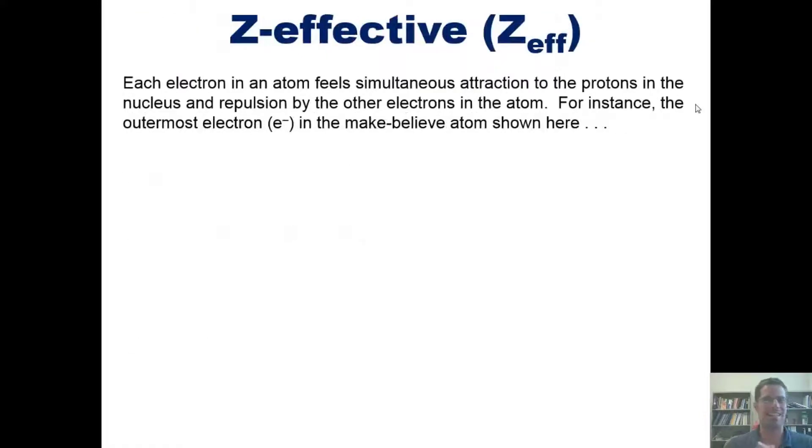Well, that said, we'll now move on to the first topic, Z-effective or Z-eff. You should definitely know by now that electrons have negative charges while protons have positive charges. Protons reside in an atom's nucleus, while electrons orbit, in some manner of speaking, around the nucleus in the orbitals that we discussed in our Chapter 6 lectures.